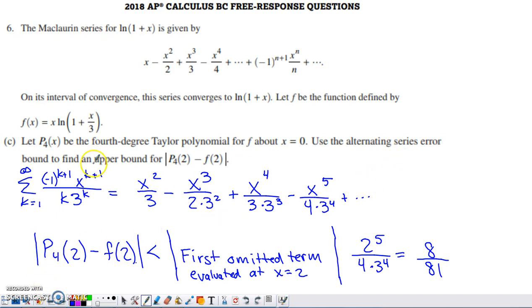Last part of this talked about the 4th degree Taylor polynomial for f based at 0. It says to use the alternating series error bound to find an upper bound for this error. What's the maximum possible error you're going to incur by estimating f of 2 by evaluating the 4th degree Taylor polynomial for this function at 2? I copied this in from part A. Here are the first 5 terms of the series. The maximum possible error I can have is going to be generated by the first omitted term evaluated at where I'm evaluating the 4th degree polynomial.